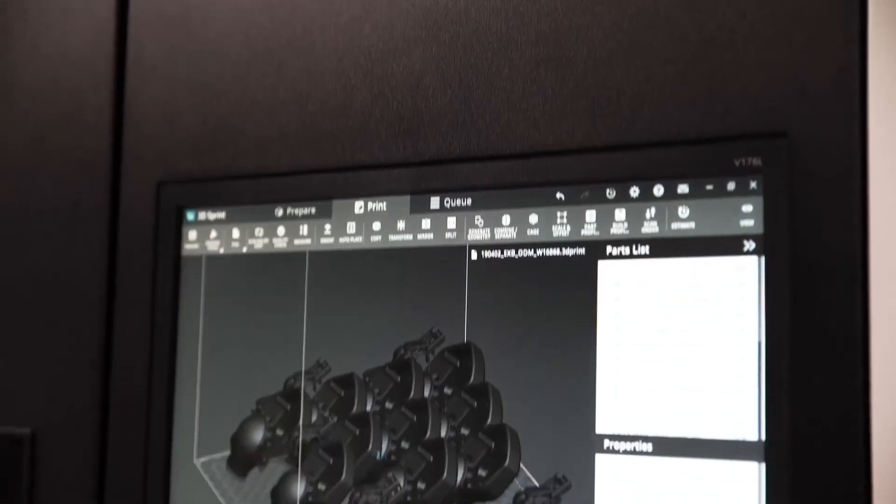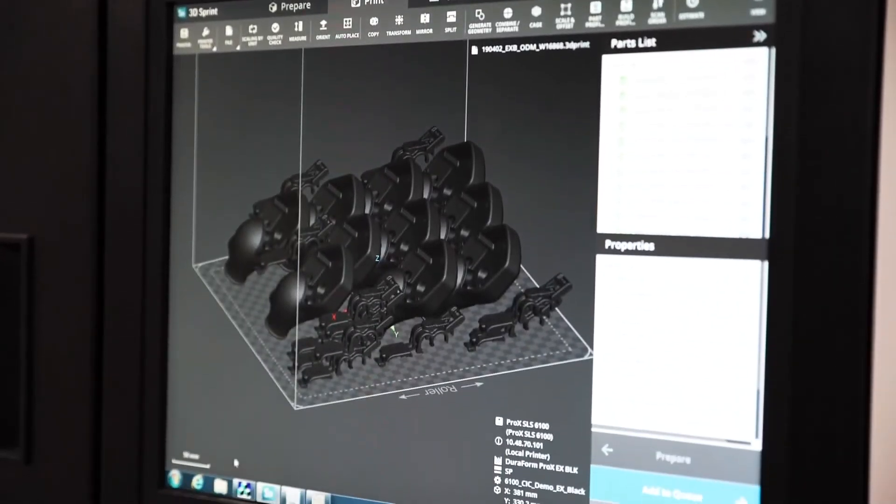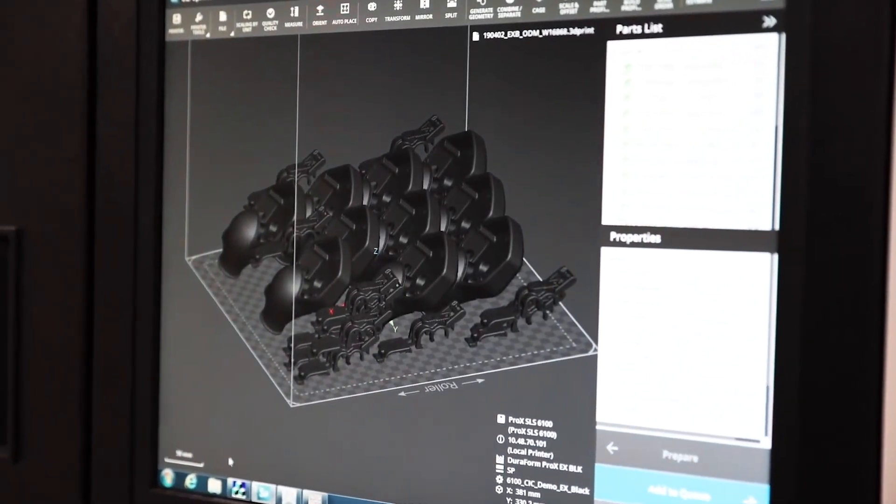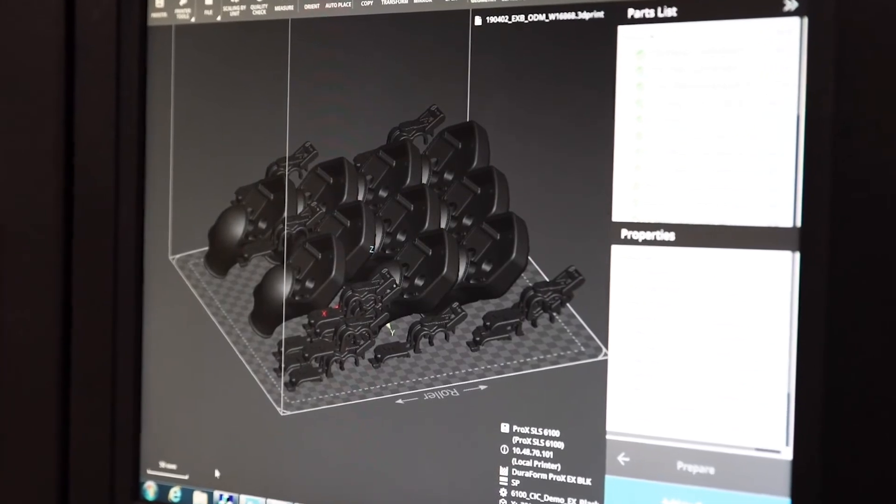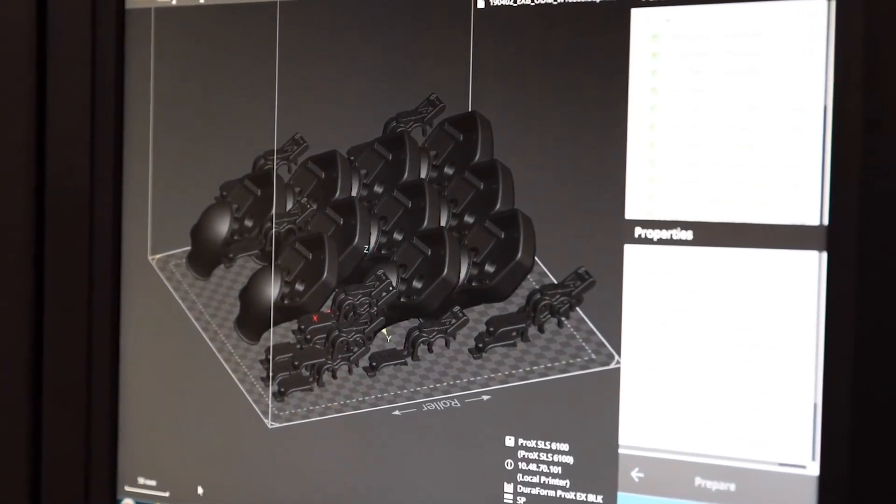Five, the Pro-X SLS 6100 saves you up to 20% on the cost of each part you print. It uses far less consumables and with a world-class 3D Sprint software taking you seamlessly from file preparation to print. Saves you thousands on license fees every single year.